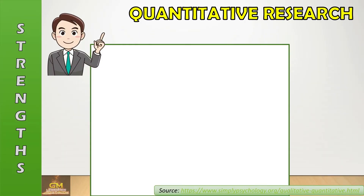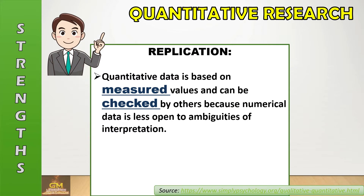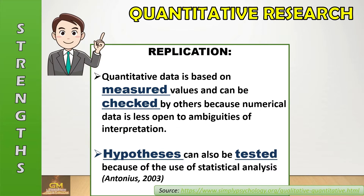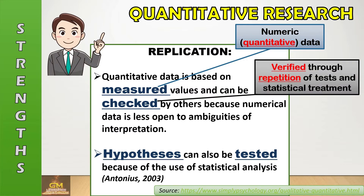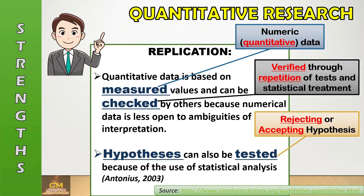Another strength of quantitative research is replication. It means that quantitative data is based on measured values and can be checked by others because numeric data is less open to ambiguities of interpretation. Hypotheses can also be tested because of the use of statistical analysis. This is according to Antonius in 2003. Measured values mean numeric or quantitative data. It can be checked by others means it can be verified through the repetition of tests and statistical treatment. Hypothesis testing means either rejecting or accepting the hypothesis formulated at the beginning of the research.